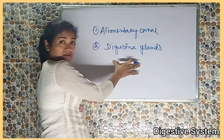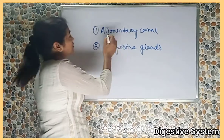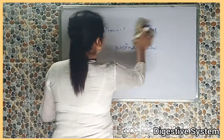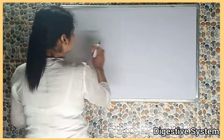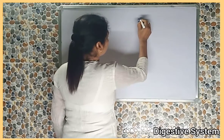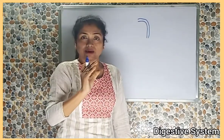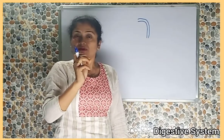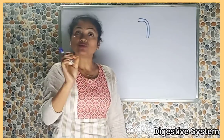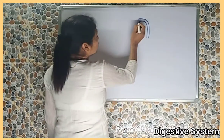Digestive glands secrete different types of digestive enzymes. Now we are going to discuss about the alimentary canal first. The alimentary canal is a long muscular tube and its length is about 8 to 10 meters.